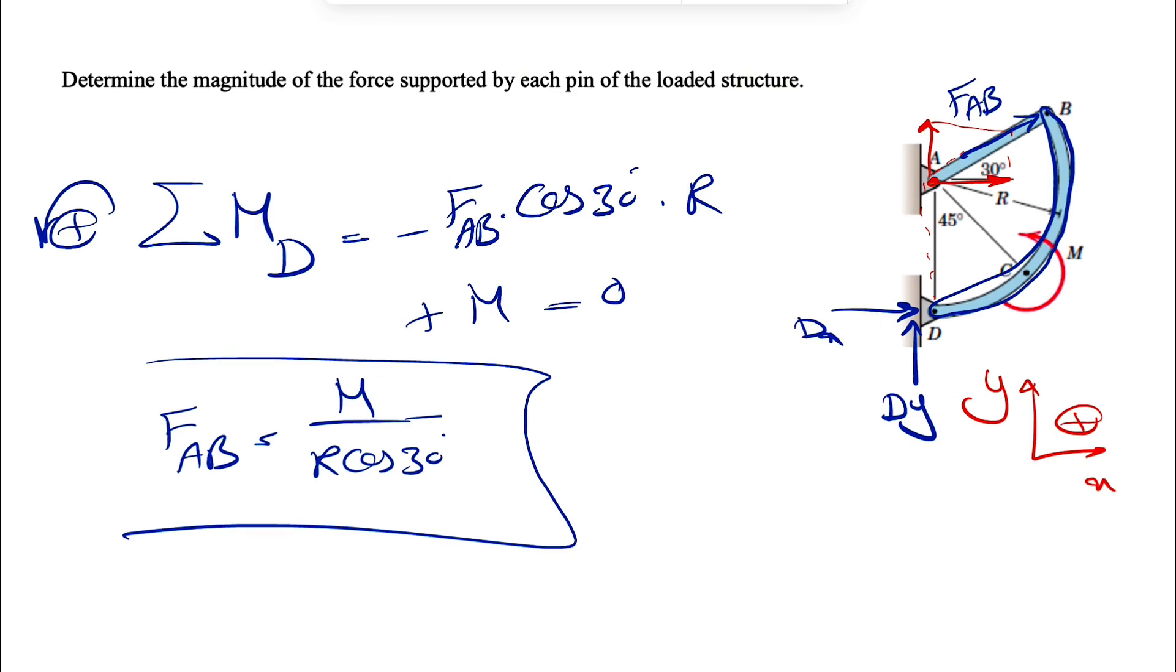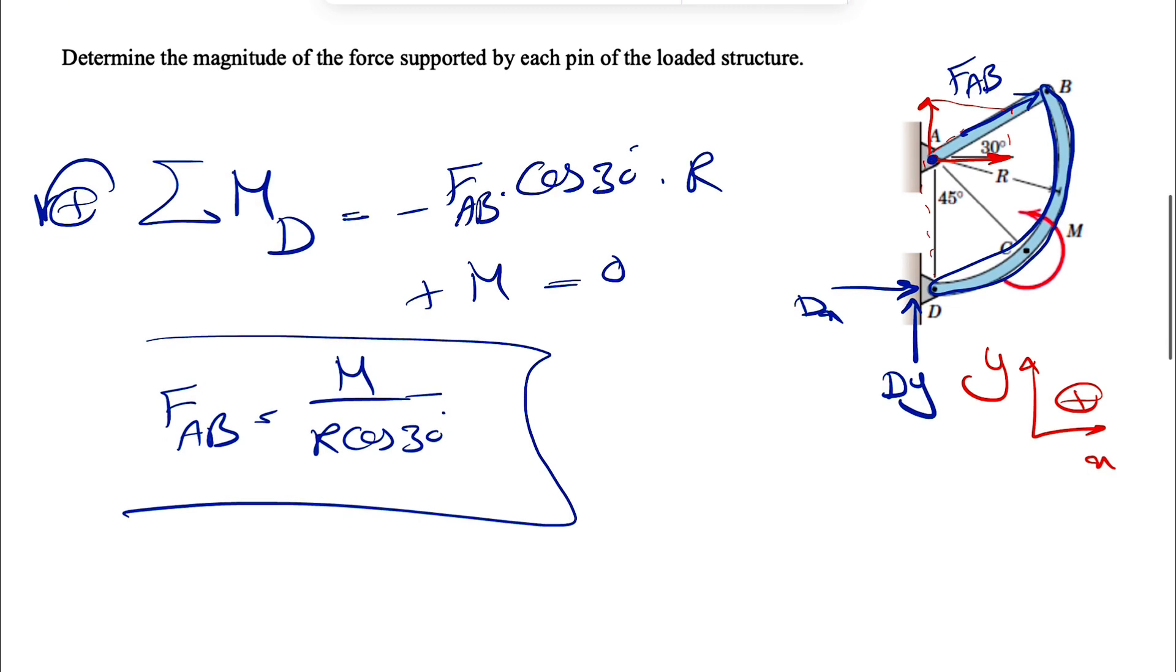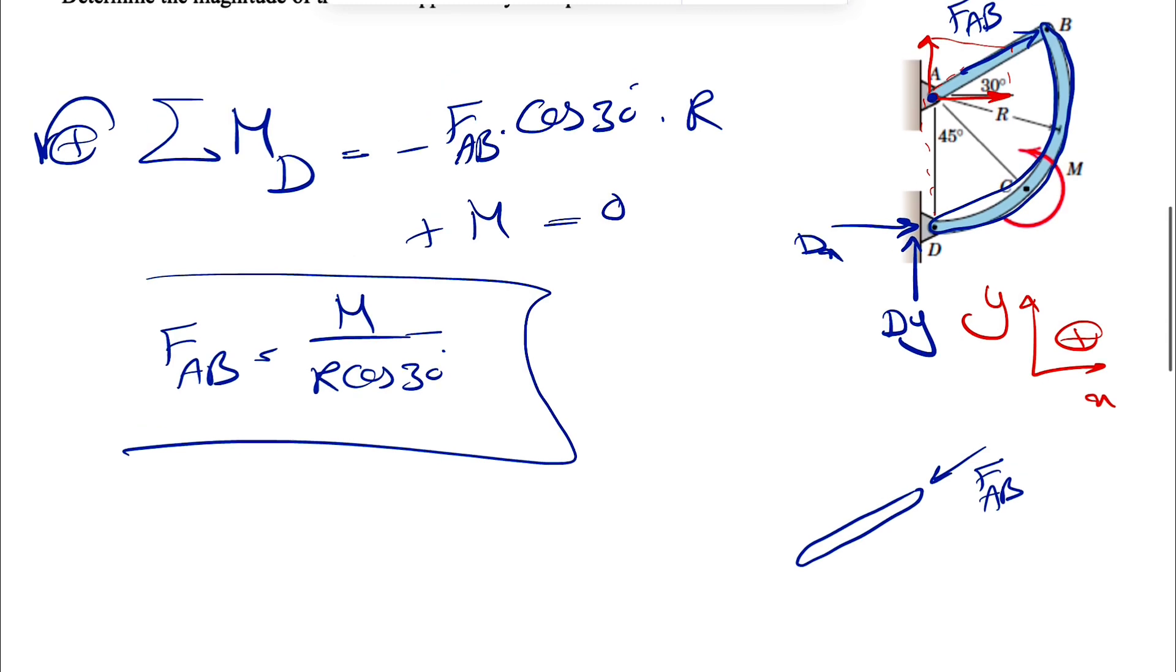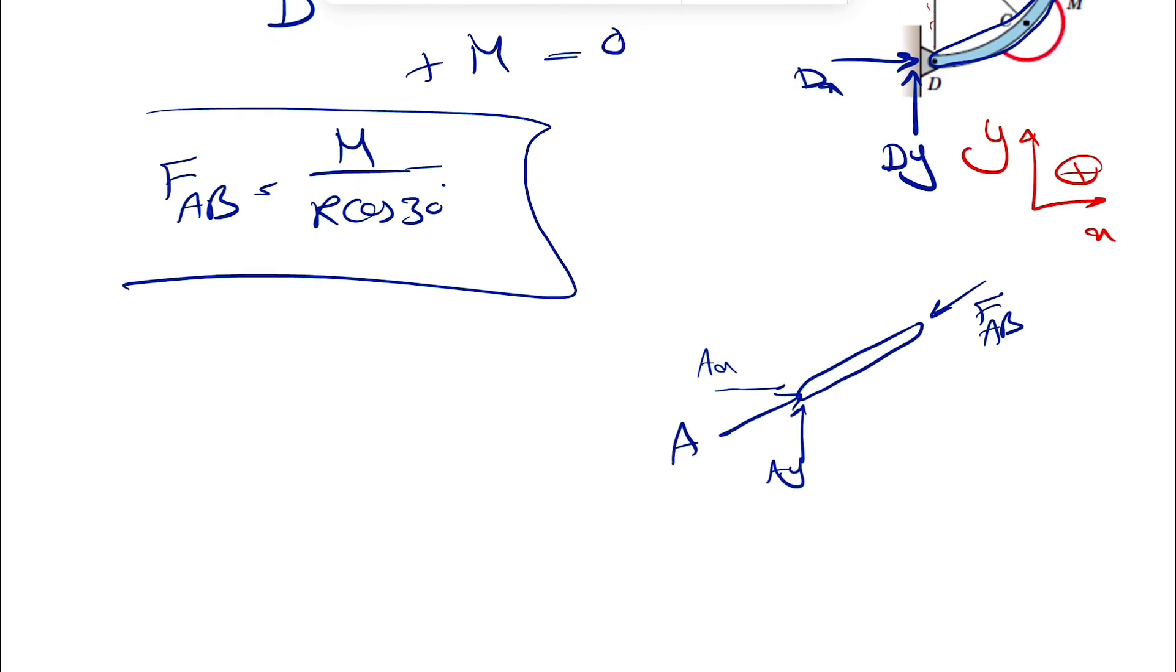Obviously, since we have a two-force member, we're going to have the same force at pin A too. If we draw the free body diagram for that member AB, FAB this time is going to be in the opposite direction of the previous one, because that's the force from the joint B to the member AB. In order to cancel that one, we're going to have the reaction at point A in this direction, which is going to be our AX and AY. Same value, and that would be the direction for A. A is going to be also same as FAB, which is M over R cosine of 30 degrees.